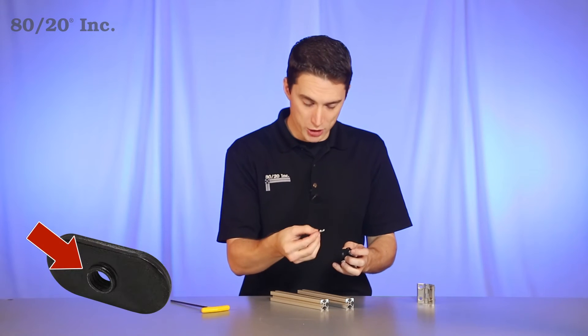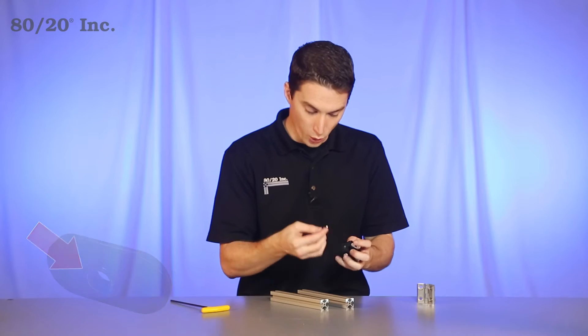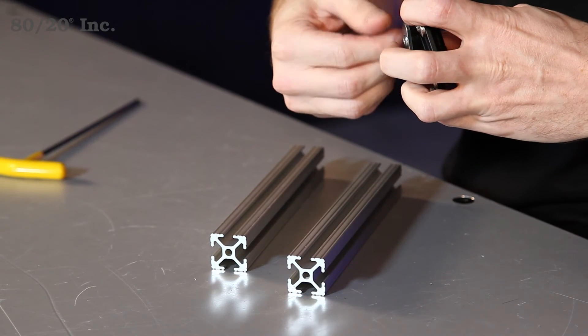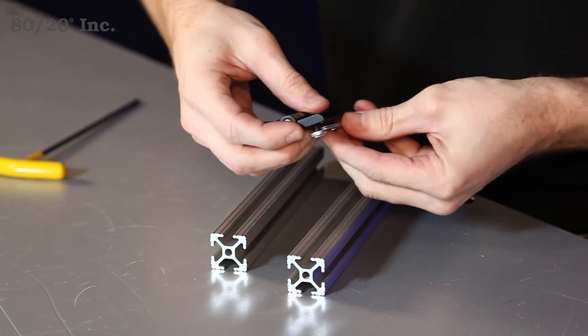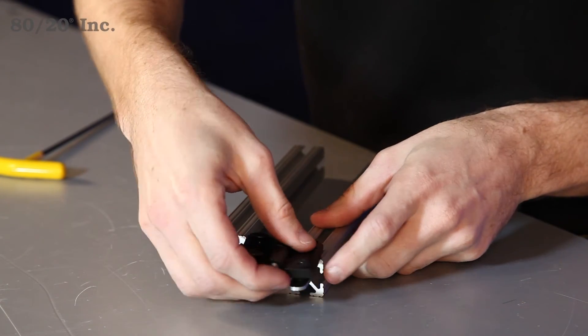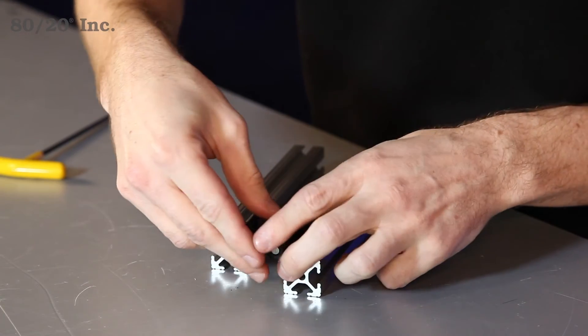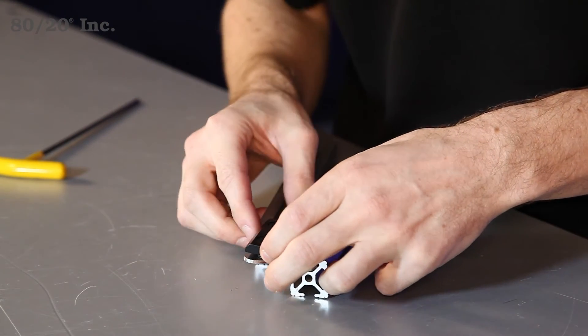The T-nut has a pilot projection that you'll want to face downwards or away from the hinge when you put it on. We'll slide that right on, take half the hinge and slide it into the open T-slot, then grab the other bar and do the same thing.